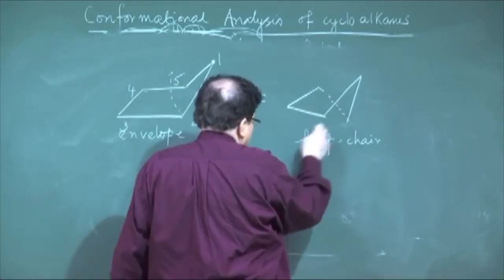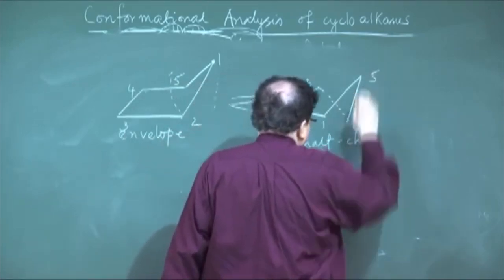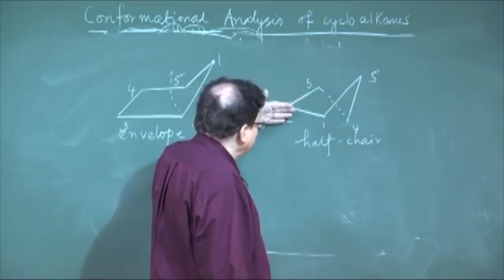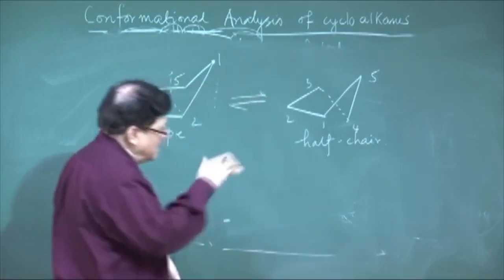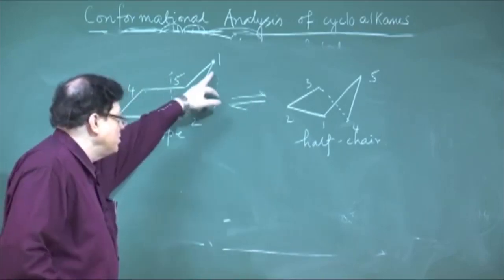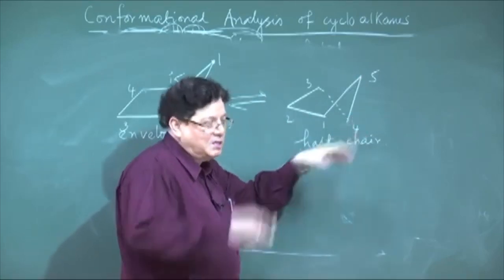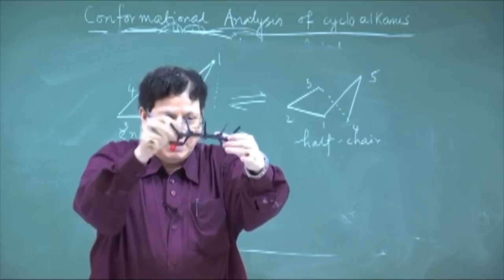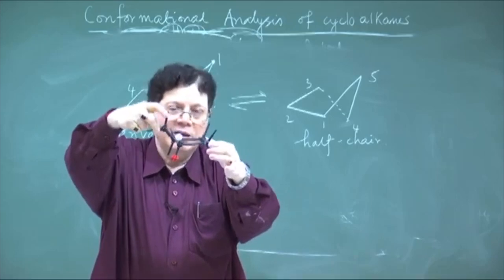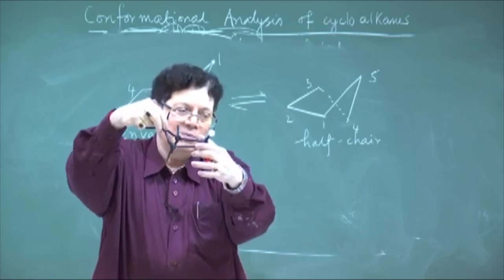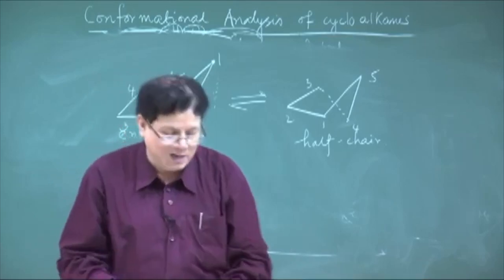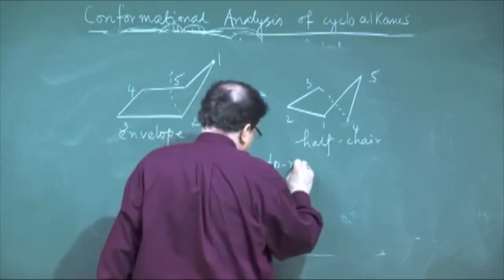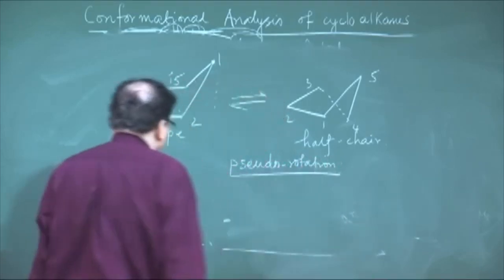The same is true in the half-chair: C5 goes down, then C1 goes up; next time C2 goes up and C3 goes down, and this continues. There is no fixed carbon atom occupying the flap position or the top or bottom position — this is continuously happening in the molecule. This process is what is called pseudo rotation.